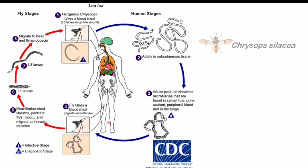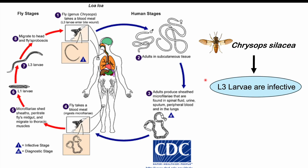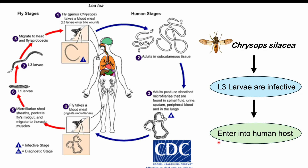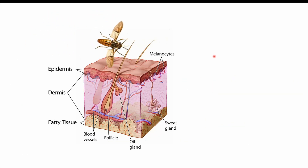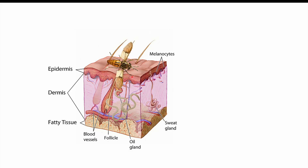Humans become infected via the bite of fly species we talked about, particularly the deer fly, also known as Chrysops salacea. This fly species can harbor what we call L3 larvae — the particular stage of this worm that is infective. When a fly lands on a human's skin, takes a blood meal, those worms can exit from the fly and enter into the patient's subcutaneous tissues.